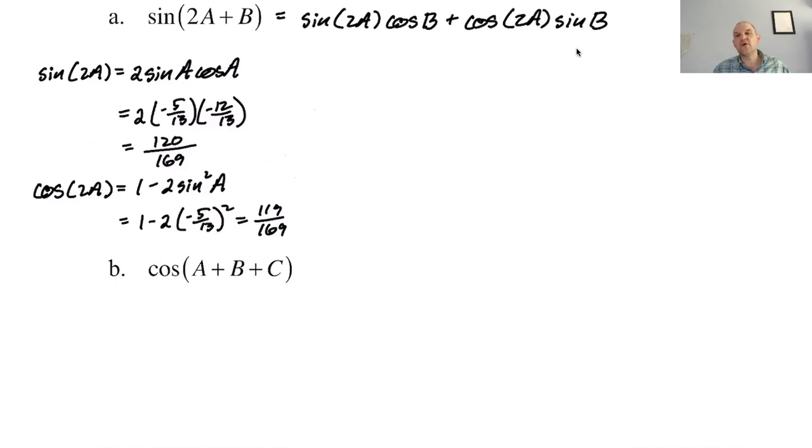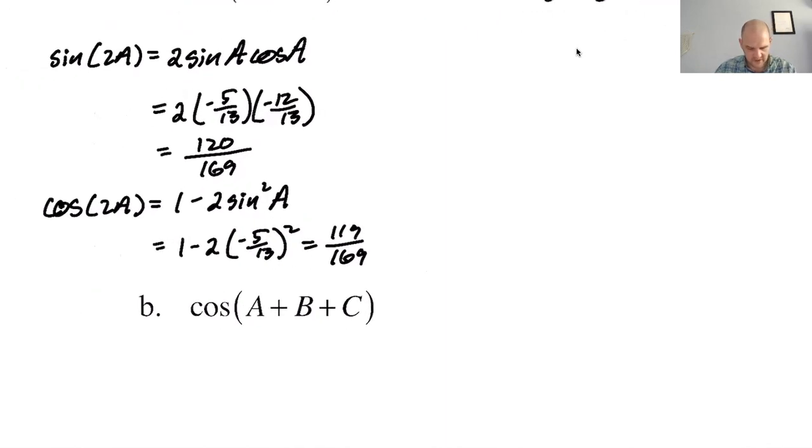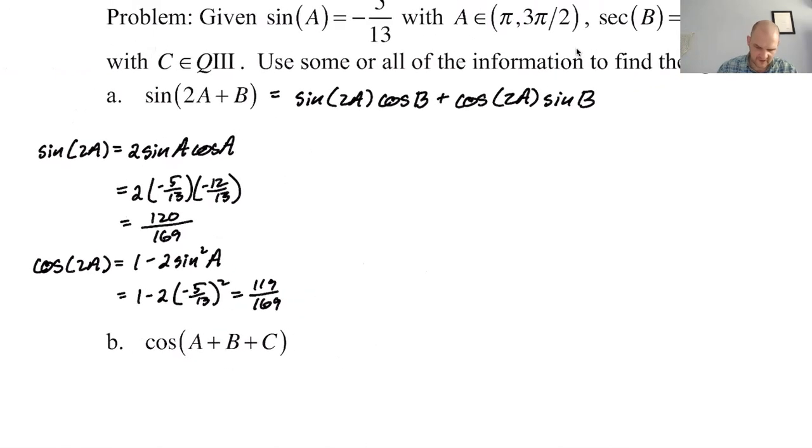So one thing that's really interesting about these kinds of problems is because the sine is 120 over 169 and the cosine is 119 over 169, we just found a Pythagorean triple. There's a Pythagorean triple that's 119, 120, 169. That's the only way that this could work. And that's really interesting to me. It's a weird way that you stumble into some Pythagorean triples.